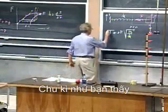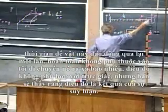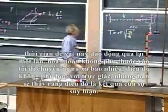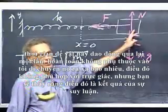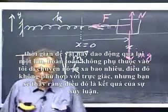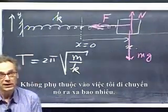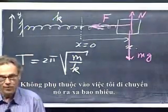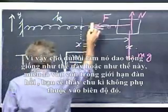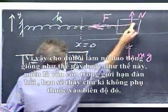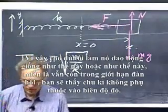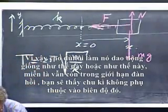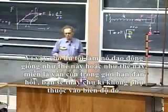The periods that you see, the time that it takes for this object to oscillate once back and forth, is completely independent of how far I move it out, which is very non-intuitive, but you will see that that comes out of the derivation. There is no dependence on how far I move it out. So whether I oscillate it like this, or whether I oscillate it like this, as long as Hooke's Law holds, you will see that the period is independent of what we call that amplitude.